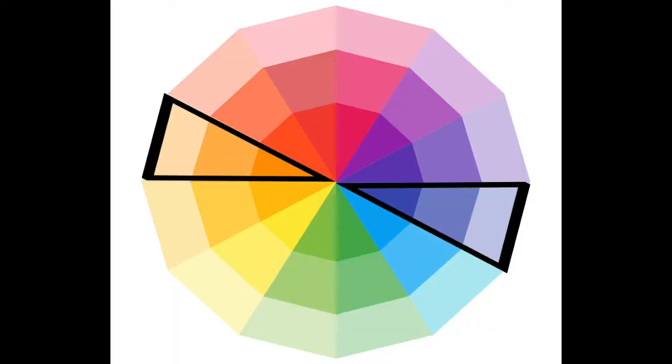The next one is complementary, which is a simpler version of split complementary. It's basically just two colors directly across from each other on the color wheel — not too difficult to explain at all.